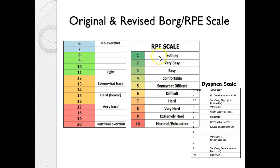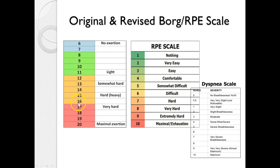The RPE or Borg scale — the original scale was designed to correlate with heart rate. So if your client says they feel like they're a 12, but then you measure their heart rate and they're at 160, they should have reported a 16. You can tell them they're actually working much harder than they're identifying — they're really a 16 right now. This helps them correlate what they're feeling with what they're doing.